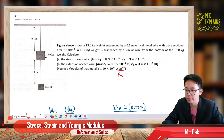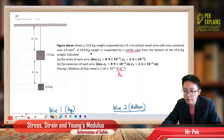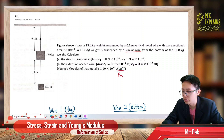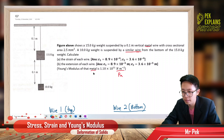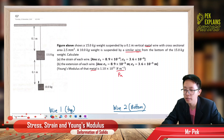So we have the 15 kilogram here and the 10 kilogram here. These two wires are called 'similar.' Similar wire means they have the same length and the same cross-sectional area. Even the Young's modulus — similar wire means they have the same material, same metal, same length, same area, same material.